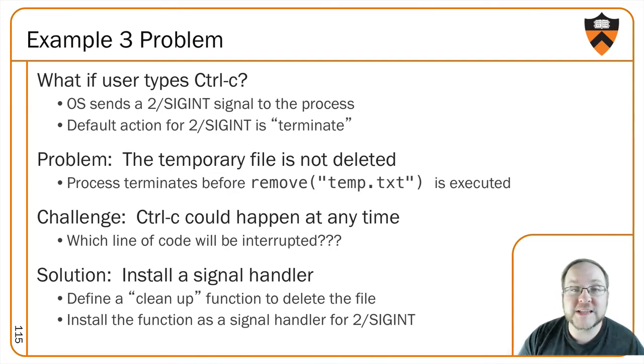When the user types control C, the OS sends a SIGINT to the process. The SIGINT will terminate the process and thus never get back to the remove call in main. So if we want to be sure that the file will be cleaned up upon exit from the program, unless someone kill minus nines it, we should install a signal handler. And in that signal handler, we can do the cleanup that we want and then exit as we otherwise would have with the signal.